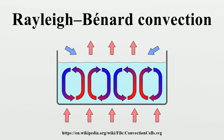Rayleigh-Bénard convection, whose effects are due solely to a temperature gradient, was first successfully analyzed by Lord Rayleigh. Rayleigh assumed boundary conditions in which the vertical velocity component and temperature disturbance vanish at the top and bottom boundaries. Those assumptions resulted in the analysis losing any connection with Henri Bénard's experiment, causing discrepancies between theoretical and experimental results until Pearson reworked the problem based on surface tension. In modern usage, Rayleigh-Bénard convection refers to the effects due to temperature, whereas Bénard-Marangoni convection refers specifically to the effects of surface tension.